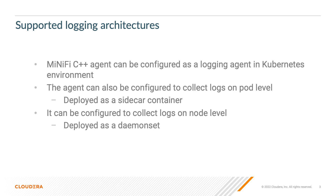In Kubernetes there are multiple ways to do log collection. One of them is to configure our logging agent, which is currently MiNiFi, at a pod level — deploying the MiNiFi container as a sidecar container in the pod we want to collect logs from. Another configuration is to deploy MiNiFi as a daemon set and collect logs on each node, filtering which pods and containers we want to collect logs from.